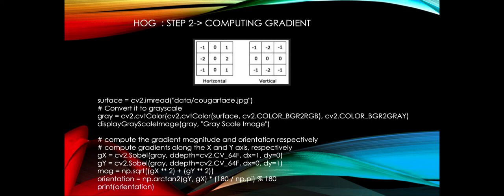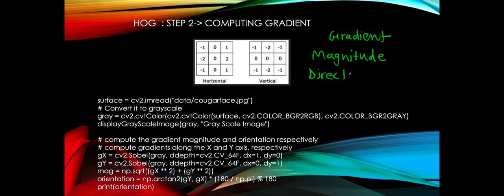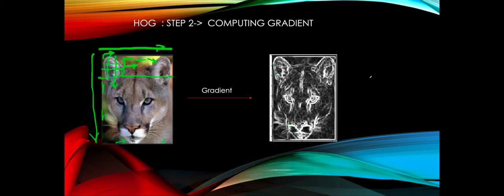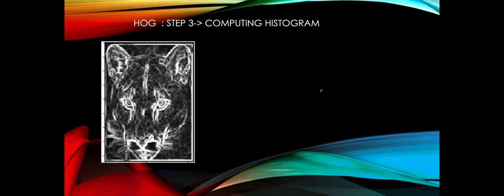Here is the code for that: we read an image using OpenCV, which gives a three-channel two-dimensional array of pixel intensities. We convert it to grayscale, then compute the gradient using cv2.Sobel in x and y directions. The gradient has two attributes: magnitude, which represents the actual intensity, and direction, which indicates in which direction the intensity is changing. We compute both magnitude and direction and can plot them.